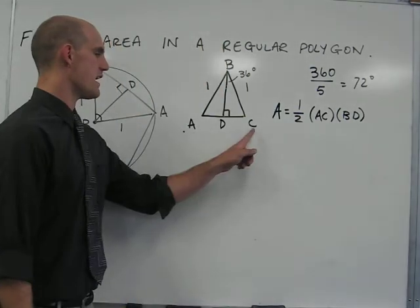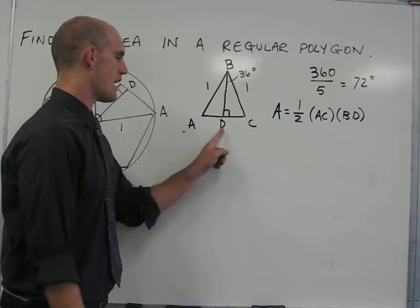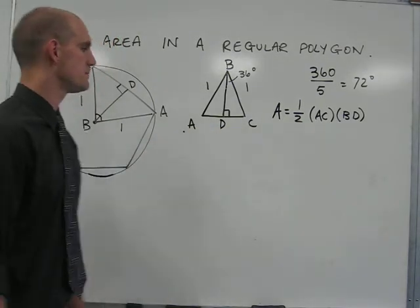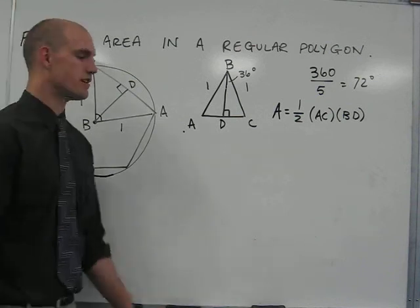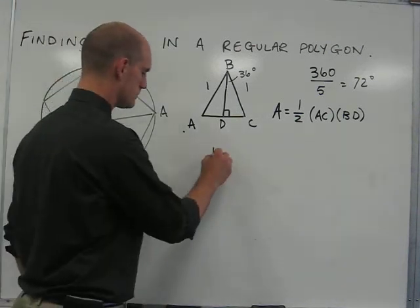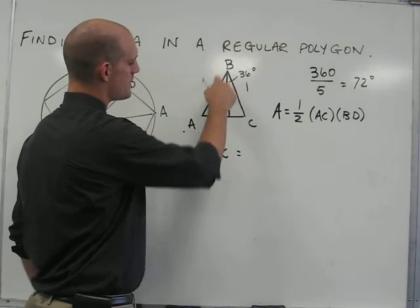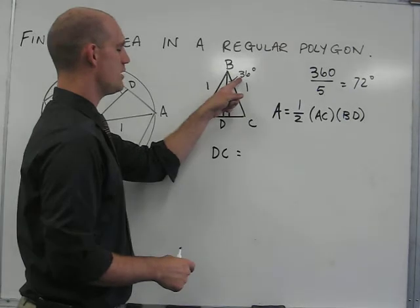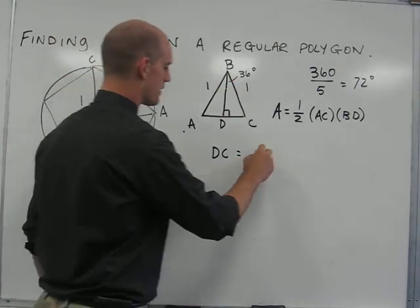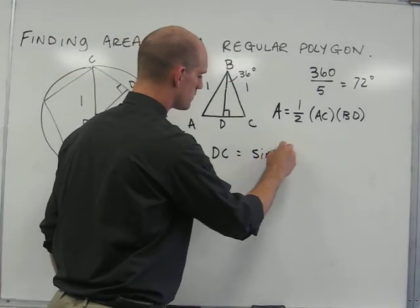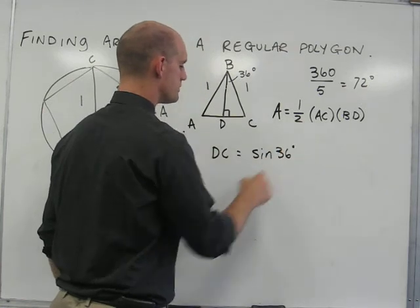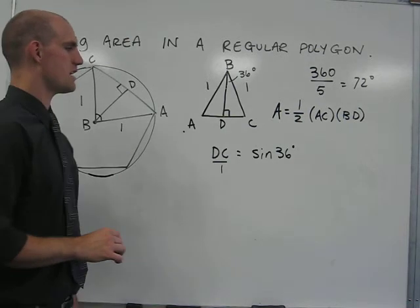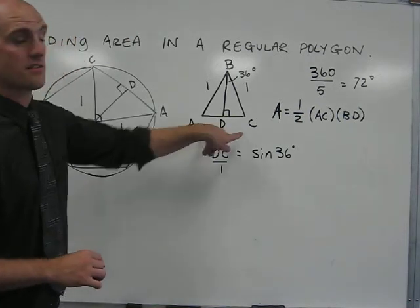Because one-half of AC is either DC or AD, if we can find one of these two segments, we can have one-half of the base. I'm going to use trig ratios to solve for the length of segment DC. Because triangle BDC is a right triangle, the length of DC can be written as a trig ratio using 36. The sine of 36 is equal to DC over 1. So DC is equal to sine 36, which is one-half of the base of the triangle that we need.